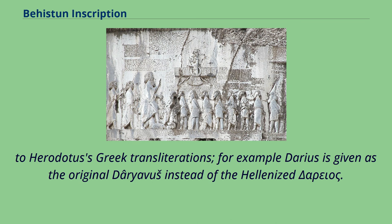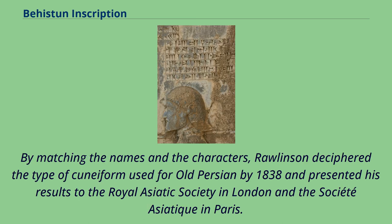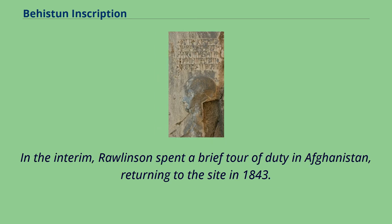For example, Darius is given as the original 'Daryavaush' instead of the Hellenized form. By matching the names and the characters, Rawlinson deciphered the type of cuneiform used for Old Persian by 1838 and presented his results to the Royal Asiatic Society in London and the Société Asiatique in Paris. In the interim, Rawlinson spent a brief tour of duty in Afghanistan, returning to the site in 1843.